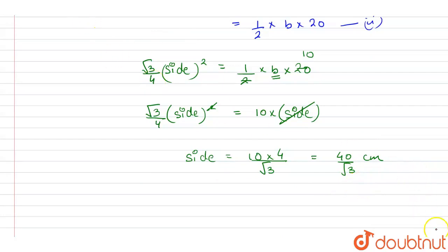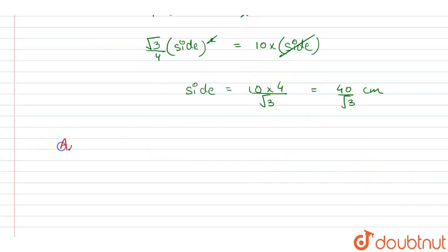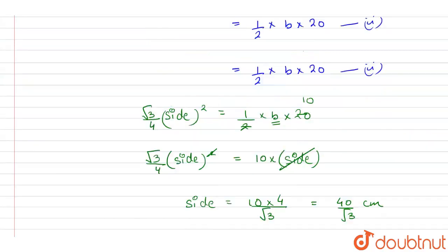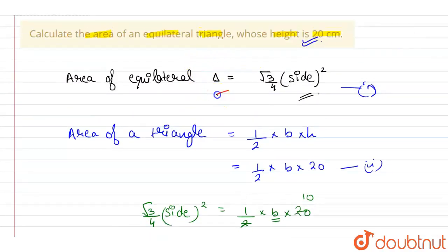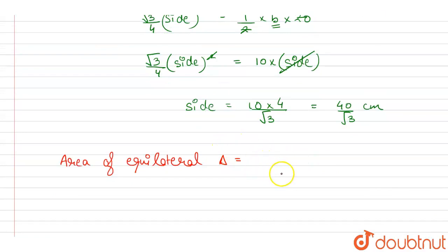Now we need to calculate the area of this equilateral triangle. We can substitute this side value into the formula root 3 by 4 into side squared. So this will be root 3 by 4 into 40 by root 3 whole squared.